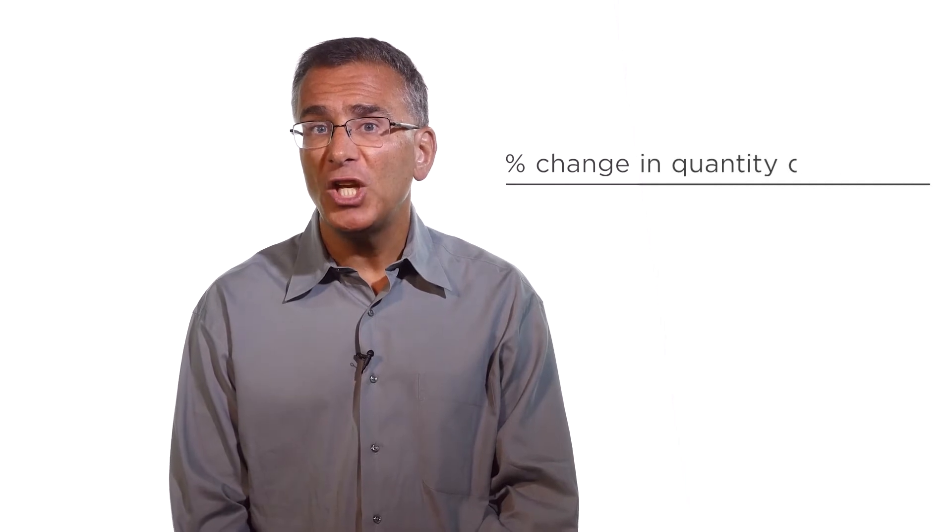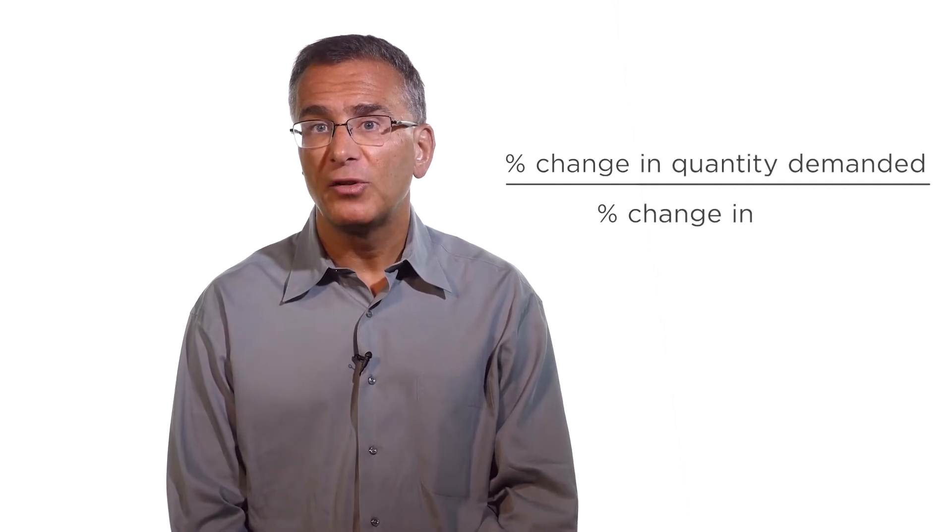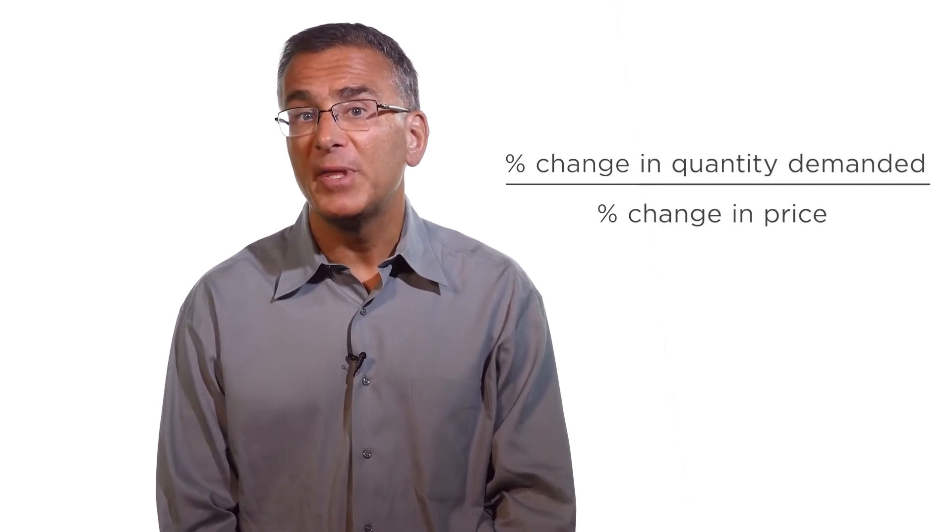Earlier, we defined the price elasticity of demand as the percent change in quantity demanded for a given percent increase in price. We can compute this elasticity by dividing the percent change in demand by the percent change in price, and for the sake of convenience, drop the negative sign.